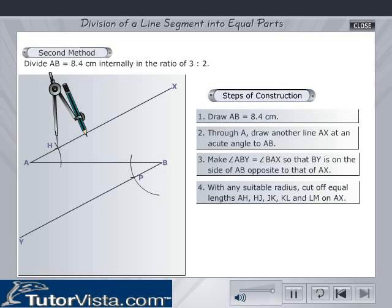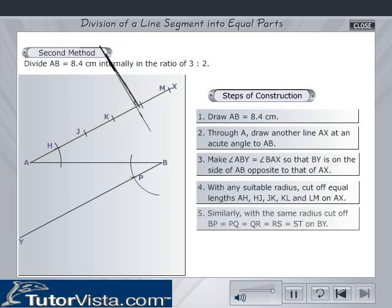Cut off equal lengths AH, HJ, JK, KL, and LM on AX.